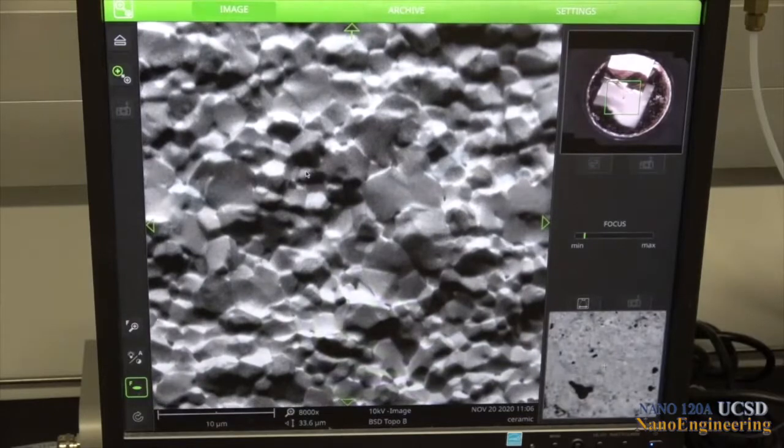In a similar manner, we can get yet a different topographic perspective by going back into settings and choosing topo B for our detector.